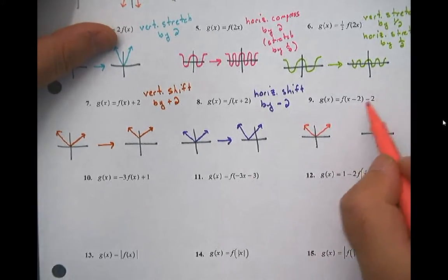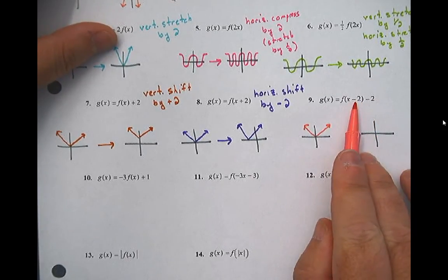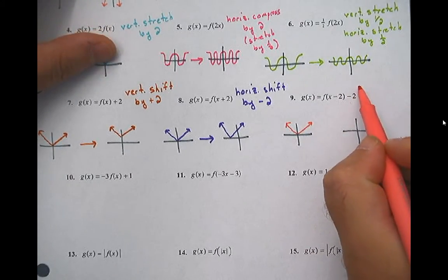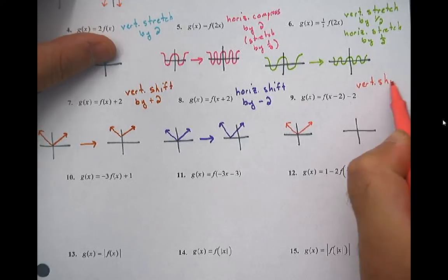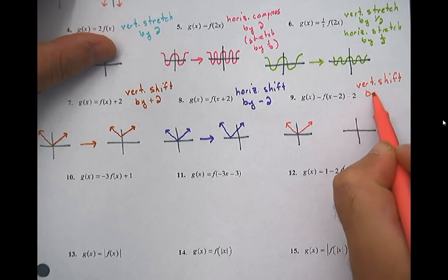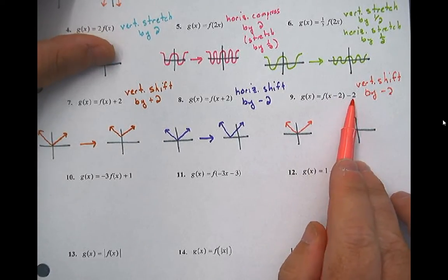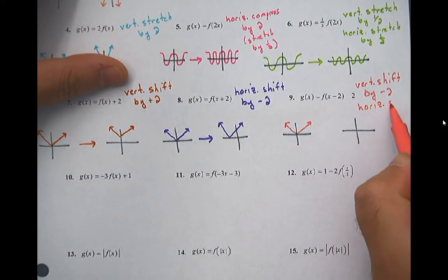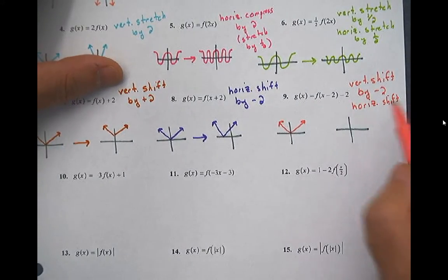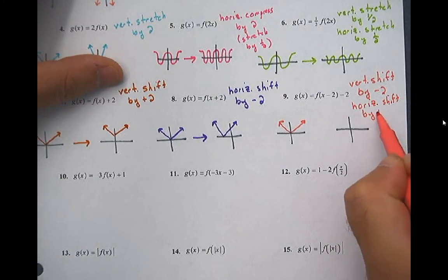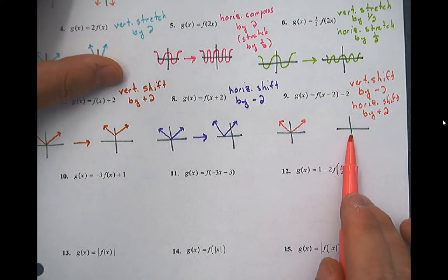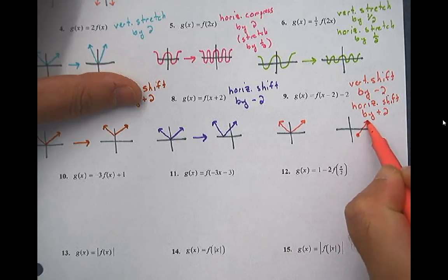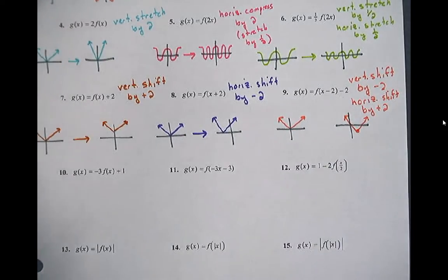Now we have a double move. We have a minus two attached to the x and a minus two attached to the function. So this is going to be a vertical shift by minus two — vertical does what it says — and then we're going to do a horizontal shift by positive two. So my graph is going to shift down two and forward two. It should look something like that.